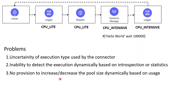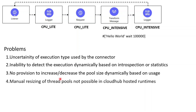Thread pool determination is not done at runtime based on statistics. There is also no provision to increase or decrease the thread pool size dynamically based on usage — all settings are done in the scheduler conf file, which is static and can only be set before starting the application. Additionally, you can manually resize via the scheduler pool conf, but this facility is not present in CloudHub hosted runtimes. Due to this, the performance was getting impacted, and you might find logs saying 'task has been rejected by the scheduler' — indicating that particular pool has been exhausted.